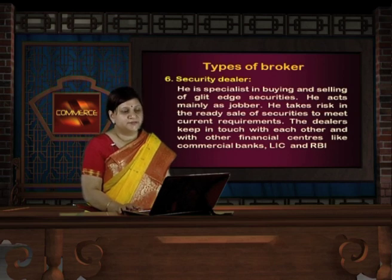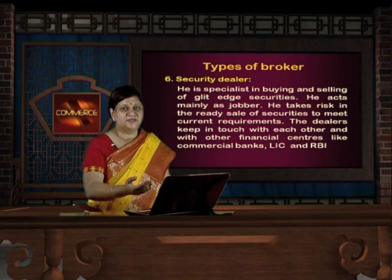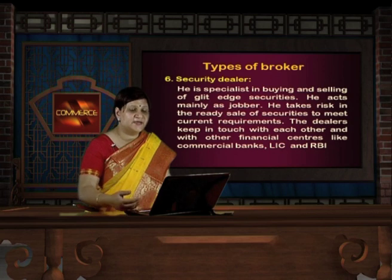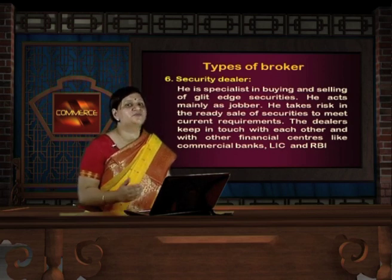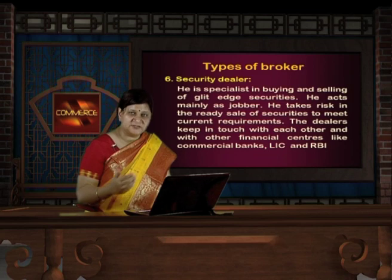The next one is security dealer. He is a specialist in buying and selling of gilt-edged securities — that is, government-related securities. He acts mainly as a jobber and takes risk in the ready sale of securities to meet current requirements. The dealers keep in touch with each other and with financial centers like commercial banks, LIC, and RBI, because RBI bonds, commercial bank bonds, or LIC scripts would be the gilt-edged securities. He works as a market maker for these securities.